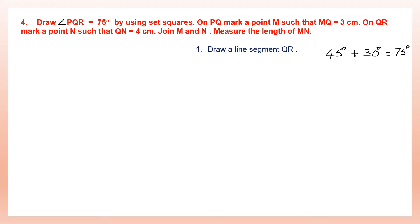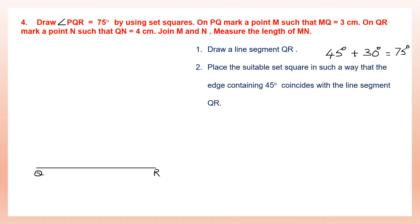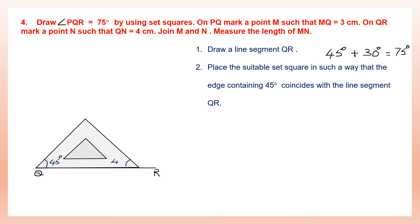First, draw a line segment QR. Place the suitable set square — the one with 45 degrees — along the line segment QR. We put the 45 degree set square along this line. This side is 45 degrees, this is also 45 degrees, making 90 degrees together on one side. We are looking at this 45 degree edge, so we already have 45.